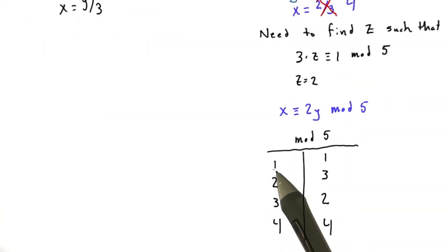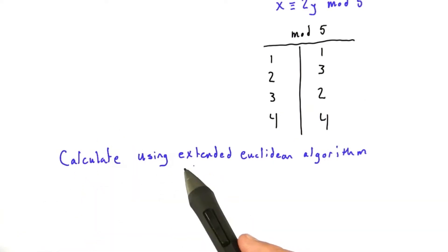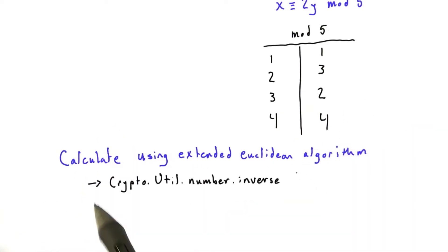And for mod 5, here are all the inverses. 1 times 1 equals 1. 2 times 3 equals 6, which is congruent to 1. 3 times 2 equals 6, which is congruent to 1. And 4 times 4 is equal to 16, which is congruent to 1. And so, we can calculate inverses using the extended Euclidean algorithm, which is implemented in the PyCrypto library in crypto.util.number.inverse.